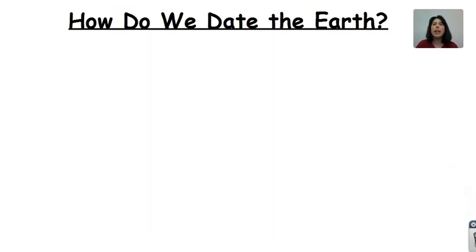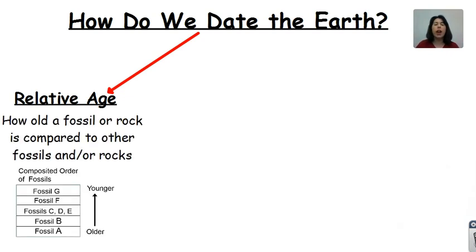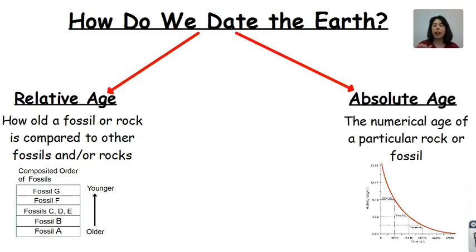So we can date the Earth two ways. One way is through an idea called relative age. Relative age is basically how old a fossil or rock is compared to other fossils and rocks — it's a comparison. We look at the things around it; it doesn't give us a numerical value. That would be under absolute age. Absolute age is a numerical age of a particular rock or fossil, so that would tell you the exact number.